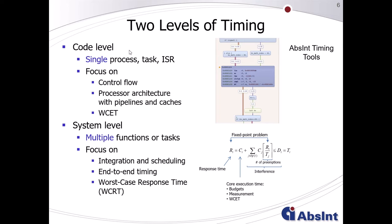On one side we have the code level, where we focus on single processes, tasks, and interrupt service routines. Here we look at the call and control flow of those processes and focus on the processor architecture with its pipelines and caches to determine the worst-case execution time. On the next higher level, with multiple functions or tasks running in one system, people focus on finding a schedule of individual tasks to compute an end-to-end timing or worst-case response time.